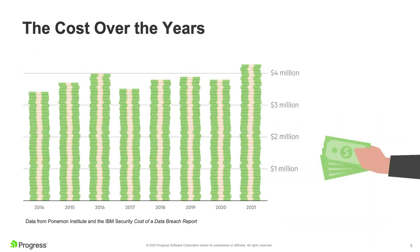The cost of insecure file transfer platforms or insecure files being transmitted throughout an organization — and the various data breaches that could occur due to that — have really been increasing year over year on average. You can see this trend going back to 2014, and it's really trending up. That's something that's going to typically continue to increase year over year, so we want to be able to mitigate this.